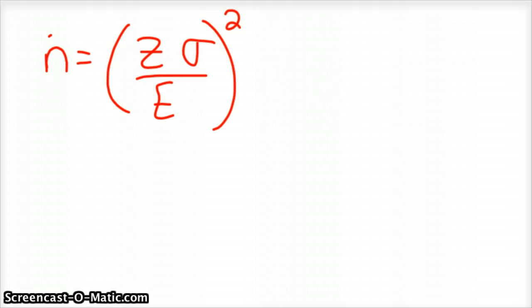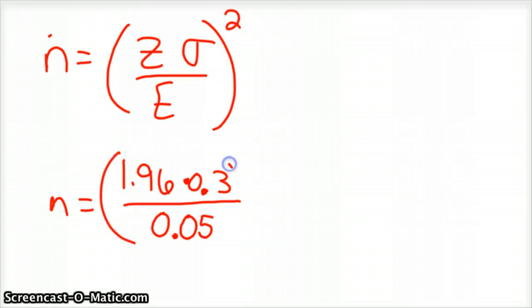So you plug all this stuff in, and you get 1.96 times your standard deviation, which was 0.3, divided by the error they require, their tolerances, and then square that.